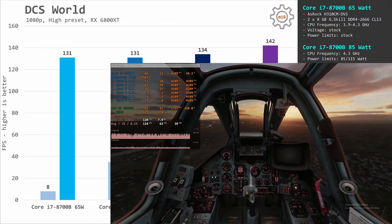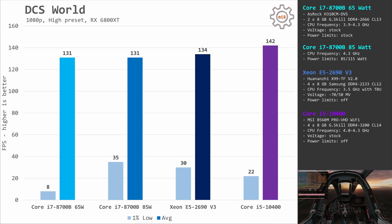In Digital Combat Simulator World, i7-8700B is not able to match i5-10400, even though the game is utilizing only one or two cores. The minimum fps is very random and not consistent, so let's look at average fps. i7-8700B in both configurations renders about 131 fps, while Core i5-10400 delivers 142 fps — a difference of about 11 fps. Interestingly, Xeon E5-2690V3 sits right in between these two CPUs at 134 fps on average.